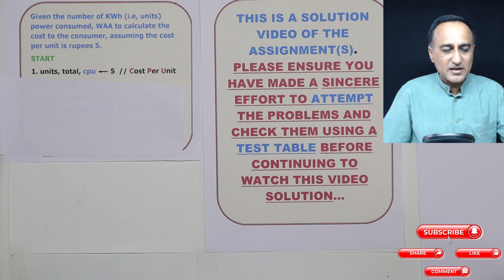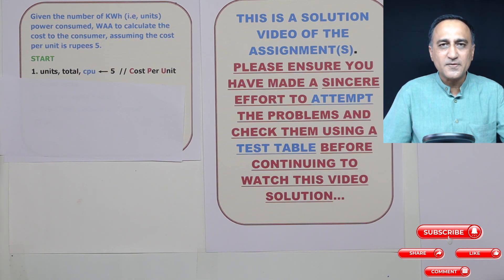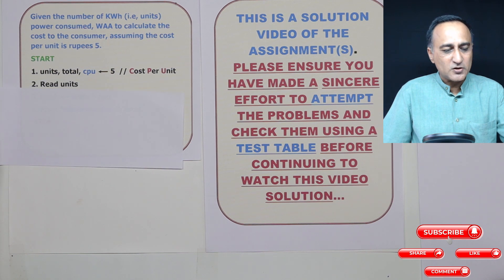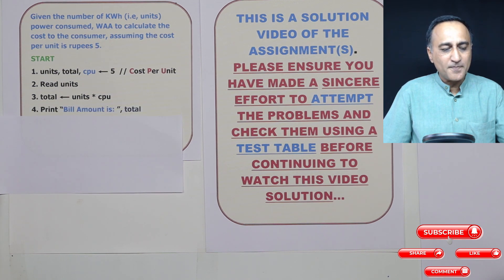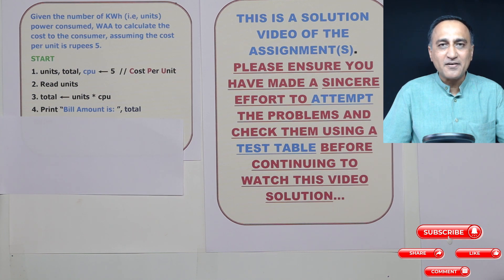To calculate the total, we need to know how many units were consumed. Let us say a household consumes 100 units. So we read units; units is 100. Then total is going to be 100 into five, so total is 500 rupees. In step four, when we print the bill amount, it will say bill amount is 500 rupees. Then we stop.